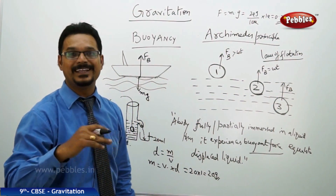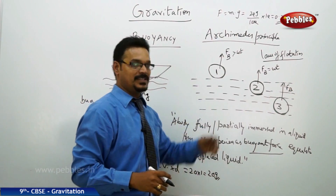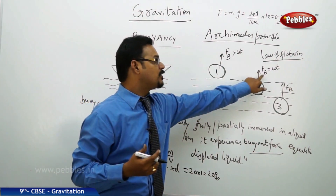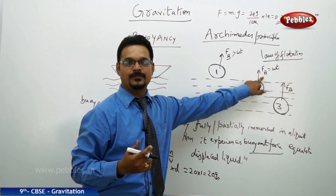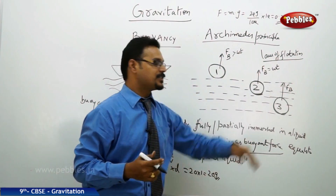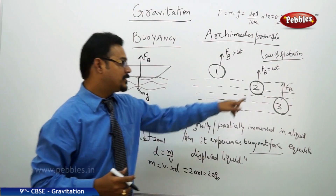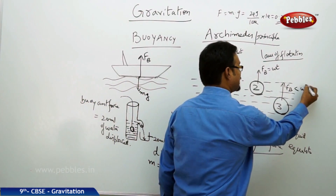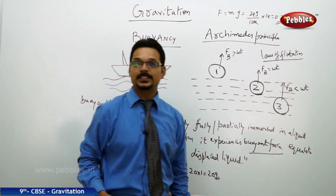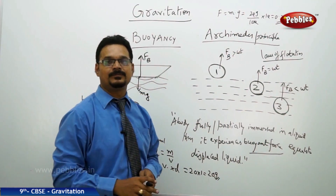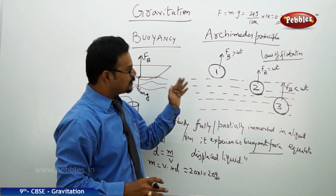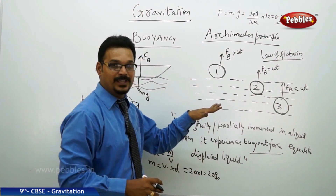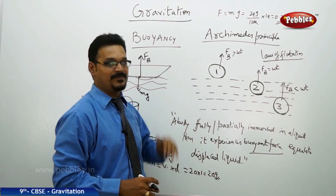The law of flotation states that whenever the weight of the body is balanced by the buoyant force, that is called the law of flotation — flotation means floating. In the third case, the buoyant force is less than the weight of the body — that's why the body sinks. So based on the buoyant force, you can tell whether the body is floating, sinking, or on the surface of the liquid.